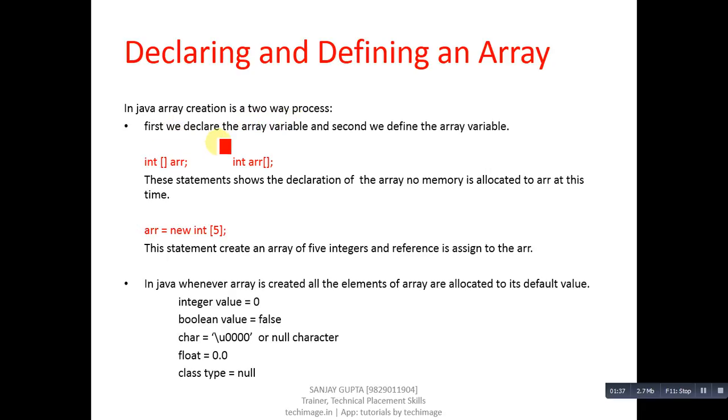In Java, array creation is a two-way process. First we declare the array variable and second we define the array variable. These are the declarations - we can declare in two different manners.